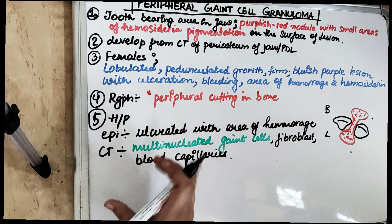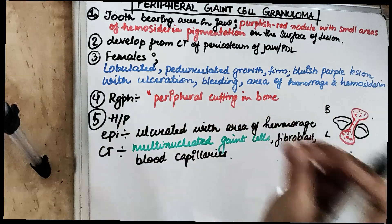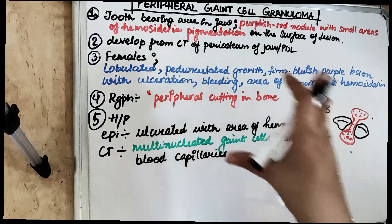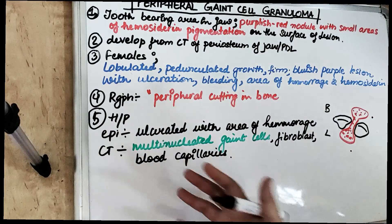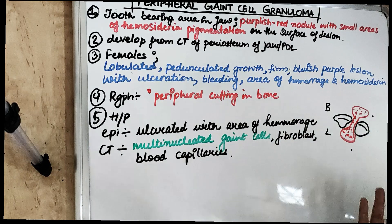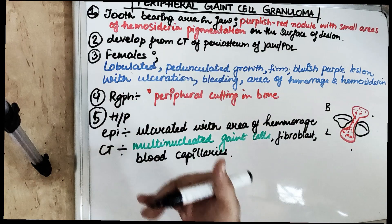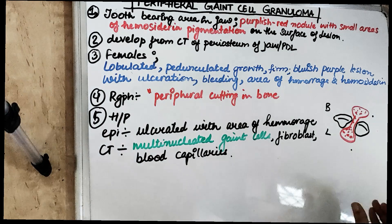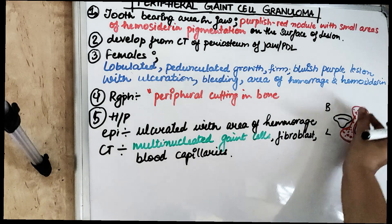It is most commonly seen in females and is usually a lobulated, pedunculated growth. It is a firm, bluish-purple lesion; ulcerations may be present, bleeding can be present, and there are some areas of hemorrhage and hemosiderin pigment. Pyogenic granuloma also presents with a similar kind of lesion, but pyogenic granuloma is softer and more reddish in color. Peripheral giant cell granuloma, in contrast, is bluish-purple and firm in consistency — this differentiates it from pyogenic granuloma. If present in between the teeth, it acquires an hourglass shape because the tissues are pushed in between the teeth.